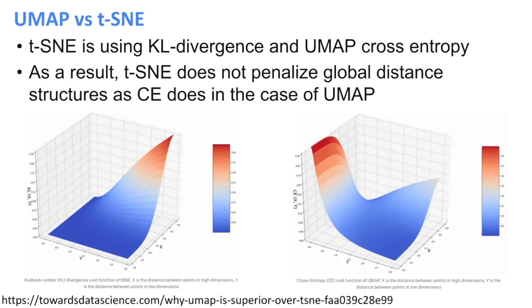How you look at this plot is you have x and y. If you look on the left, x stands for the distance between points in high dimensions. So if I have two points and they have a high distance, they would be somewhere here at the front — let's say three — down here. And y would be the distance of the two points in the low dimensional projection. So ideally, we want to preserve distances.